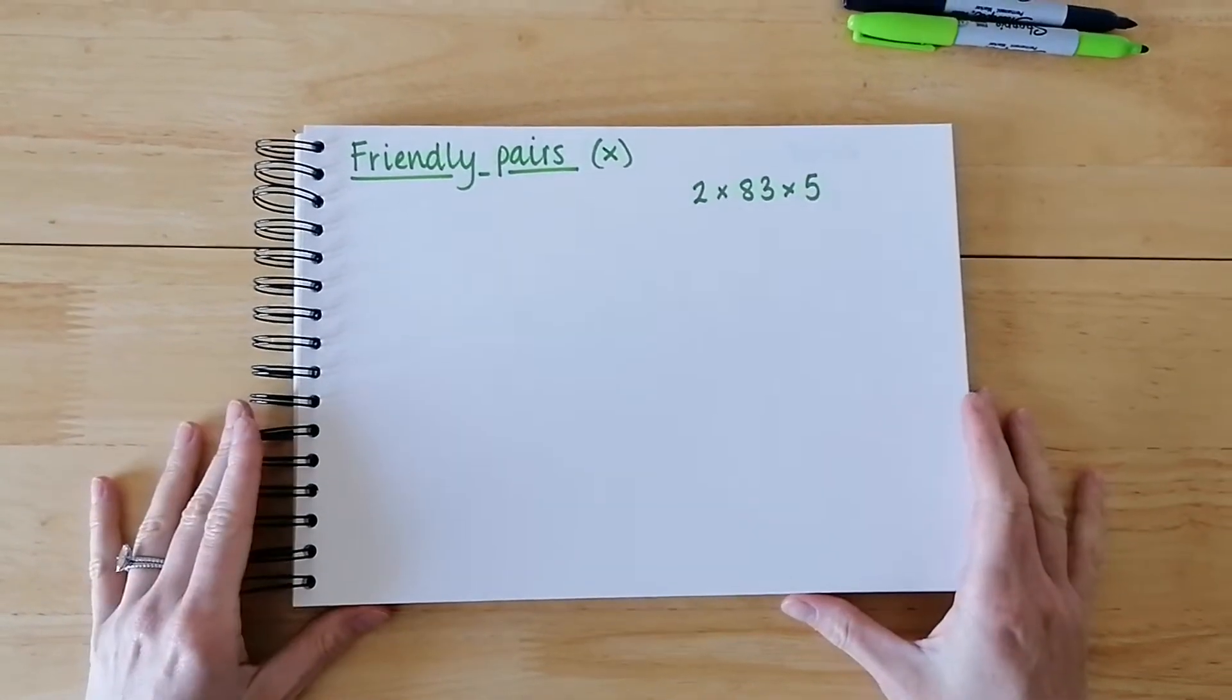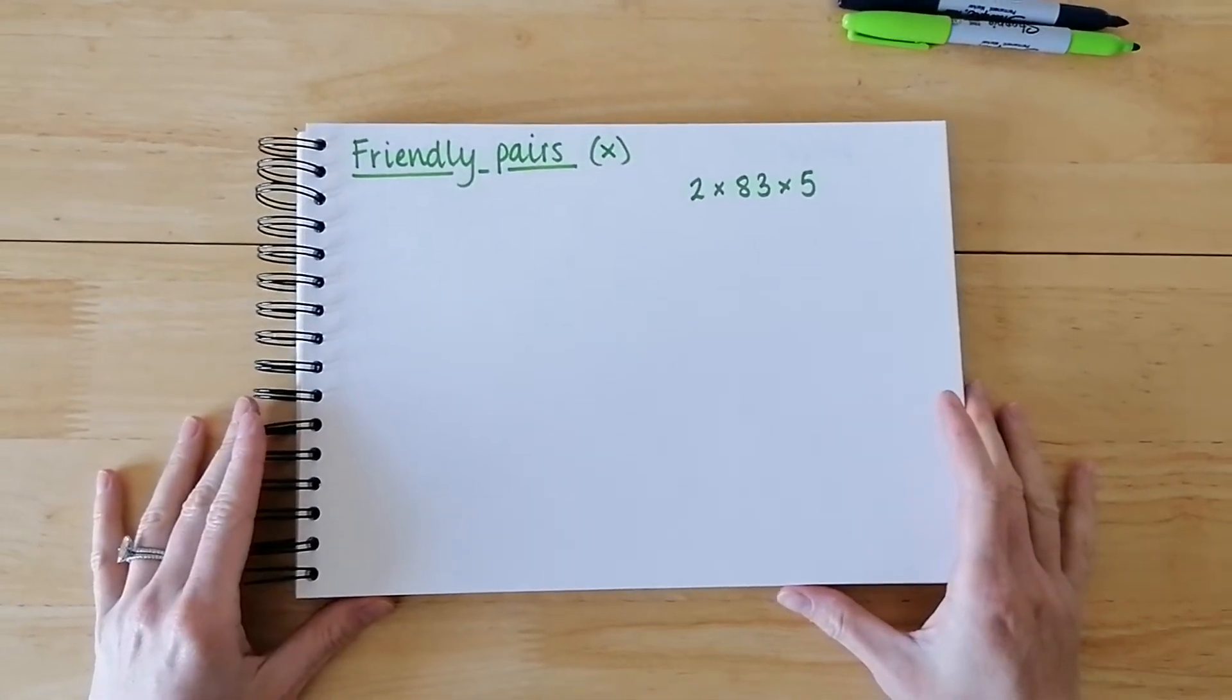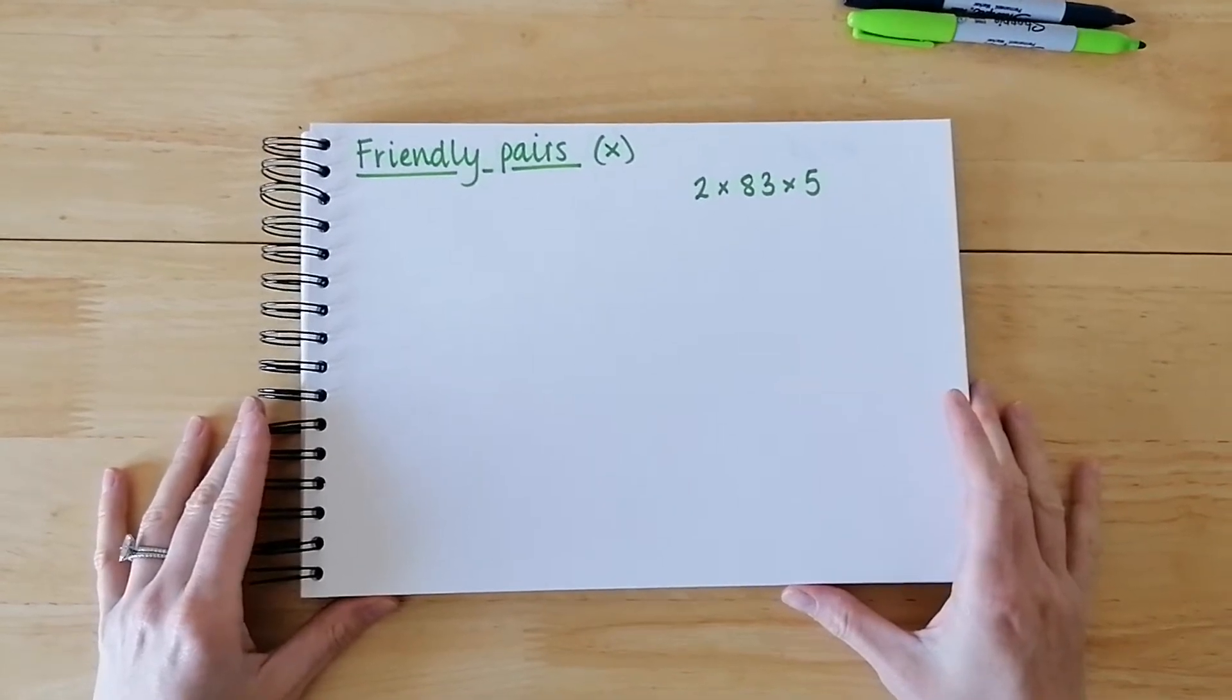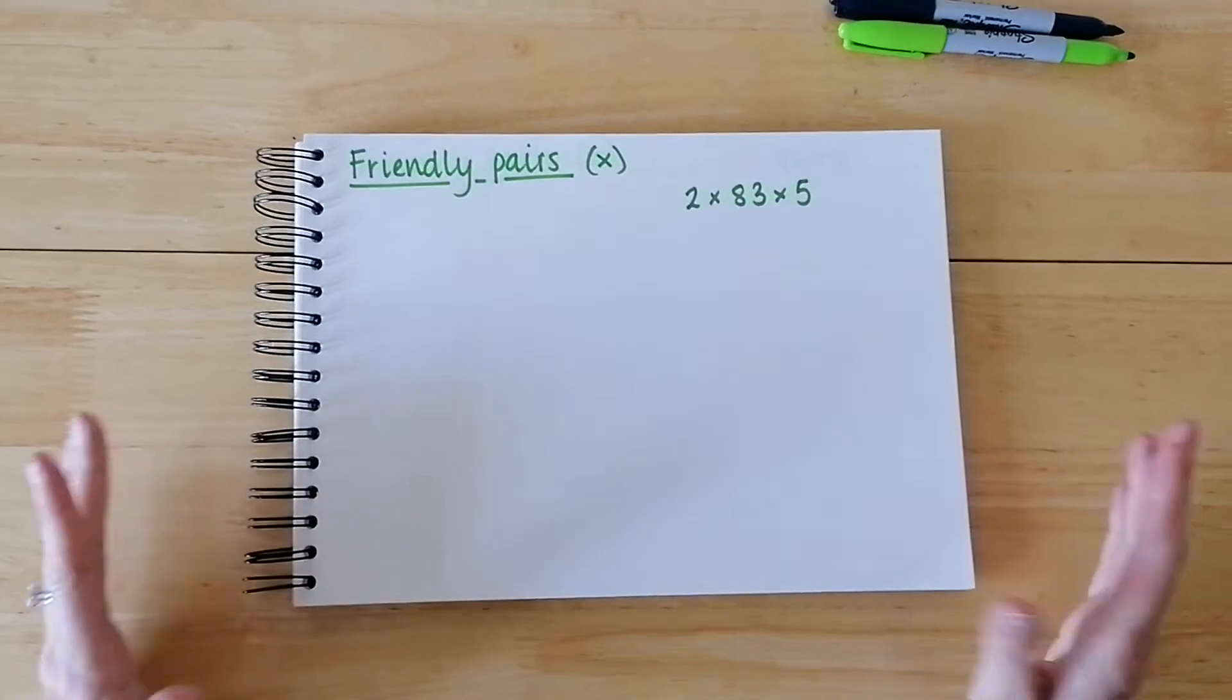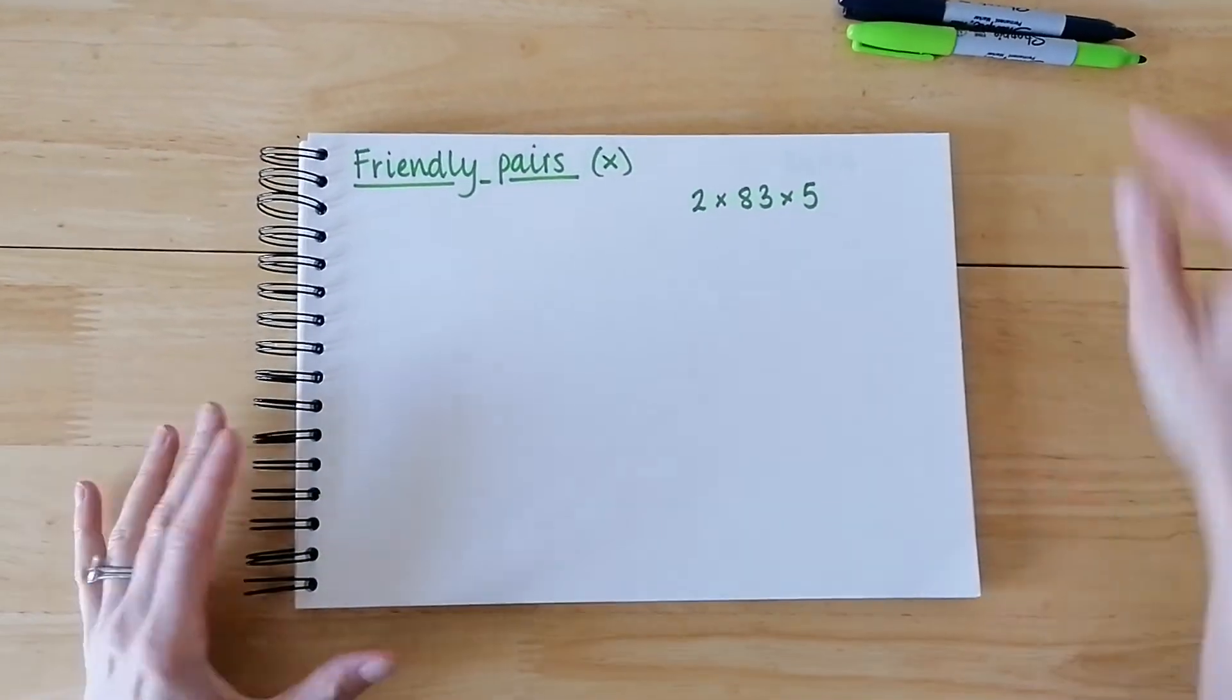This is the friendly pair strategy for multiplication. So we've got 2 times 83 times 5, which looks quite daunting at the start, but we're going to look for two numbers that can multiply together to make a friendlier number.